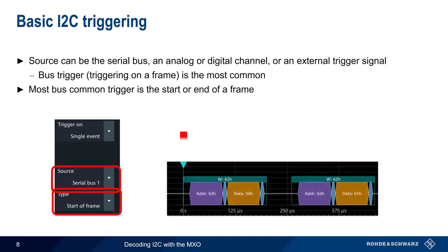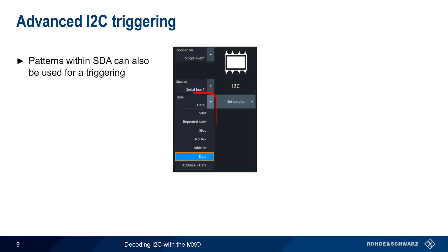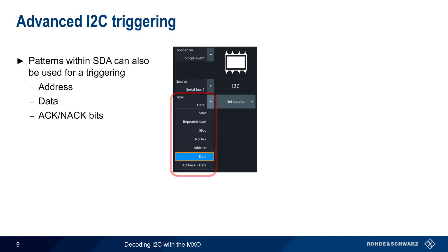In this example, the MXO triggered when it detected the beginning of an I2C frame. In addition to basic frame triggering, the MXO also supports triggering on patterns within the SDA data — for example, on an address and/or a data pattern, or when a negative acknowledgement is received. These parameters are defined by clicking on 'Set Details.'